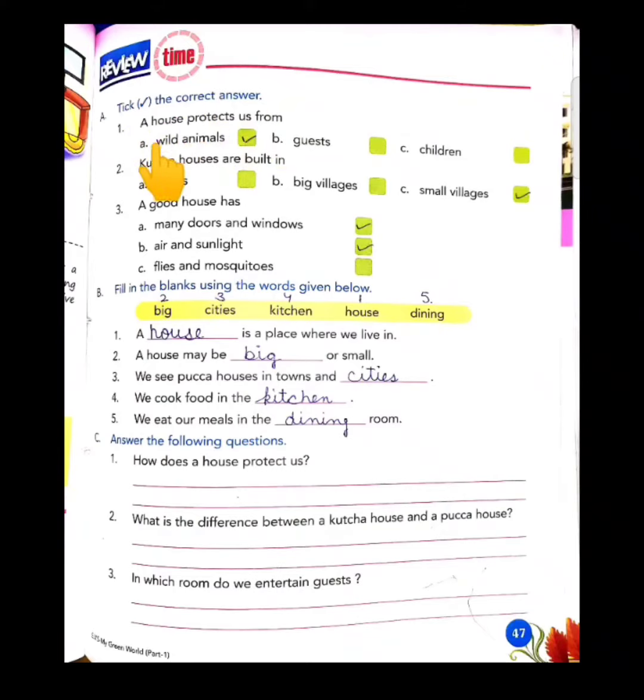Tick the correct answer. A house protects us from wild animals, guests, children. The correct option is wild animals.